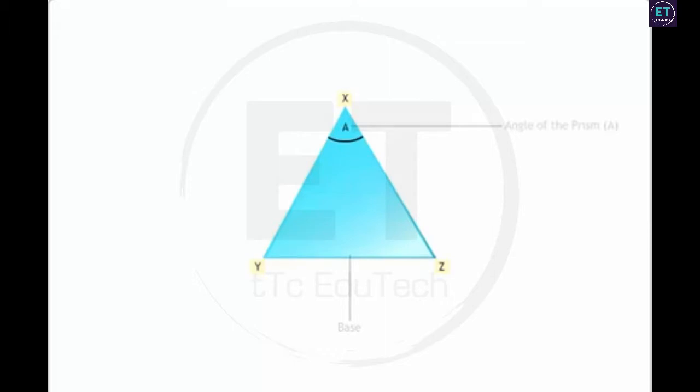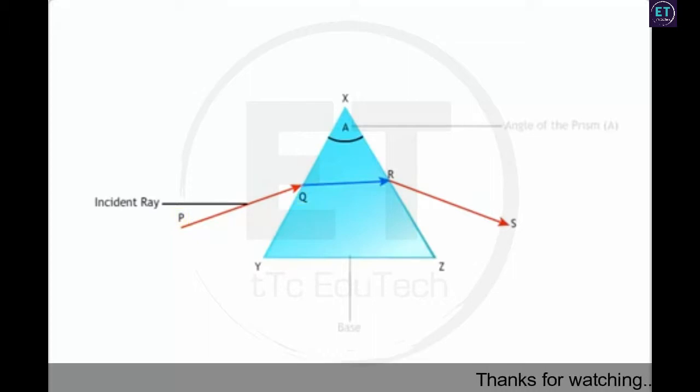Consider XYZ, the cross section of a triangular glass prism. When a light ray PQ is incident on the face XY of the prism, it refracts at the two refracting surfaces and follows the path PQRS as shown. Now, a quick recap of the terms associated with refraction. The ray of light that is incident on a surface is called an incident ray. Therefore, PQ is the incident ray. Q is the point of incidence.